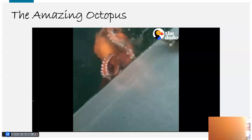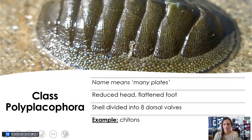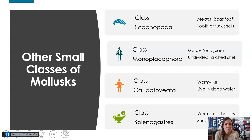Pretty cool what they are capable of. The final class we're going to talk about in detail is class Polyplacophora — poly meaning many, so many plates. These ones have a reduced head and a flattened foot, and they actually have eight valves that their shell is divided into. The main example in this class is the chiton.